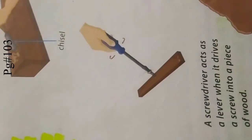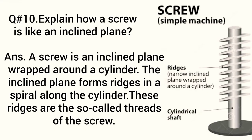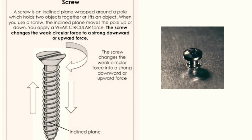We have to do question 11: Explain how a screw is like an inclined plane. A screw is an inclined plane wrapped around a cylinder. The inclined plane forms ridges in a spiral along the cylinder. These ridges are the so-called threads of the screw. Now see this diagram - screw is a simple machine that has a cylindrical shaft and narrow inclined plane wrapped around a cylinder. These wrappings are called ridges. A screw changes the weak circular force to a strong downward or upward force, and these inclined planes wrapping help it.